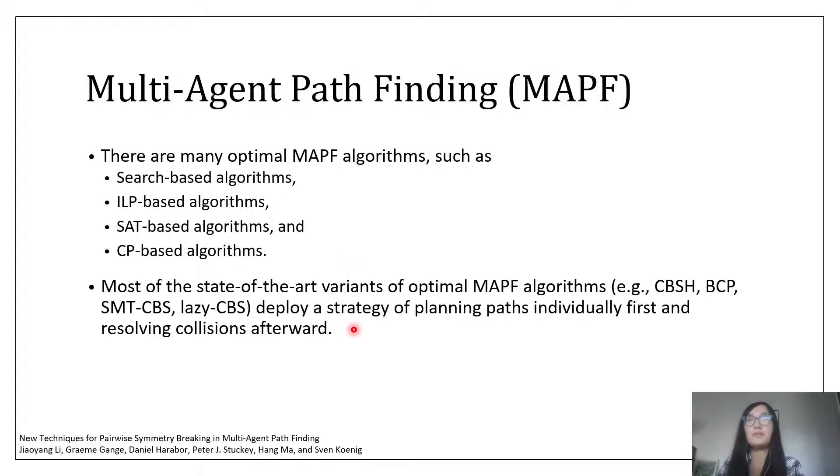Therefore, recently, people have invented many new algorithms that deploy a strategy of planning paths individually first and resolving collisions afterward. These methods are shown to be much faster than previous methods. However, these methods suffer from collision symmetries, and if these symmetries are undetected, they could lead to unacceptable runtimes.